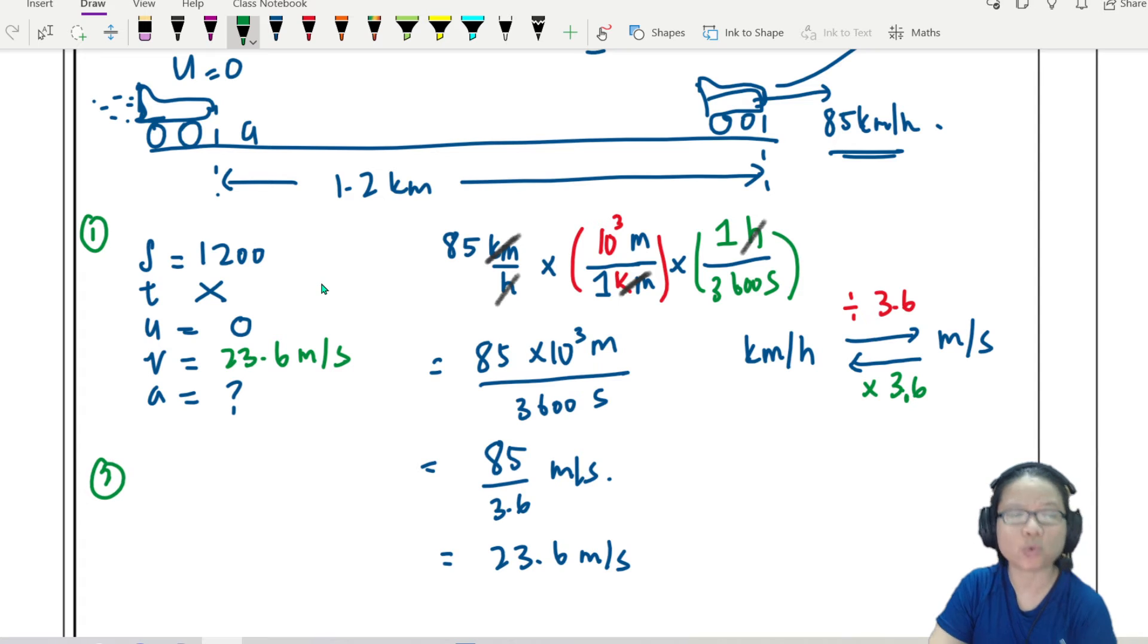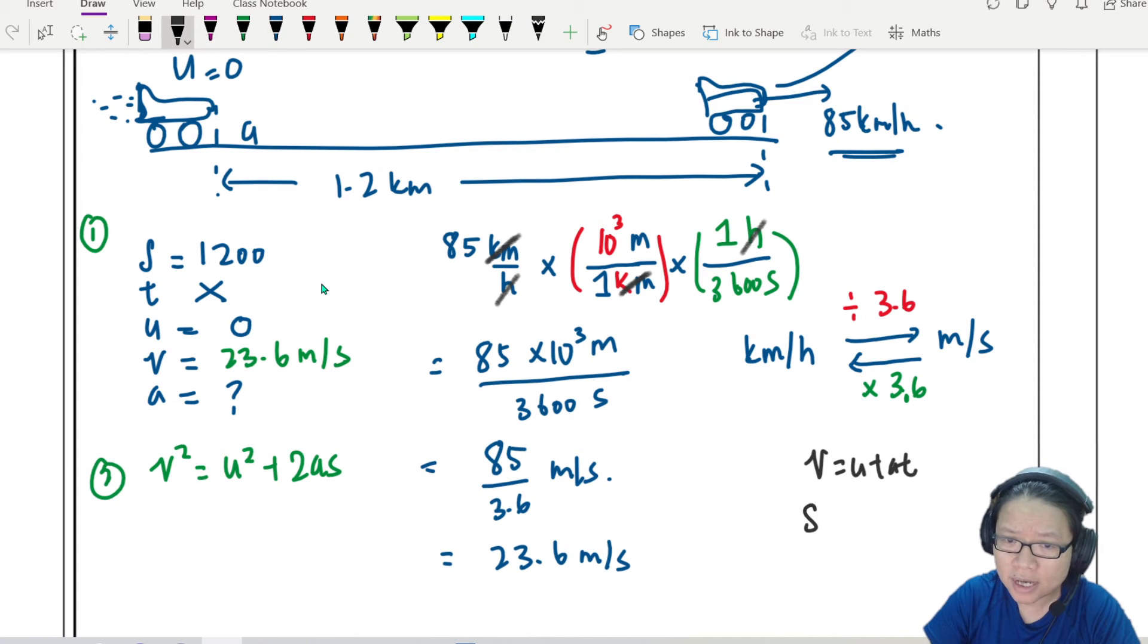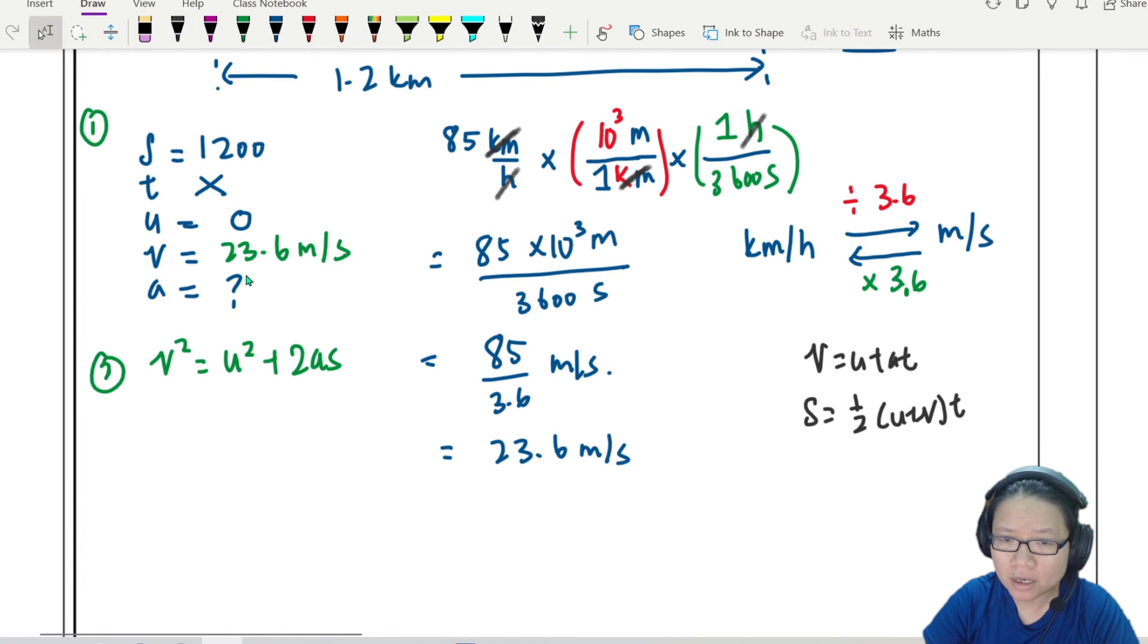So right now we already have this 85 km per hour. I can change it to 23.6 meter per second. So step one, done. Step two, choose equation. So when I choose equation, no T. Which equation got no T? V squared is U squared plus 2AS. The four equations I have to remember. Which four equations are we talking about again? We're talking about V is U plus AT. S is half U plus V times T. And S is equal to UT plus half AT squared. And also, V squared is U squared plus 2AS.